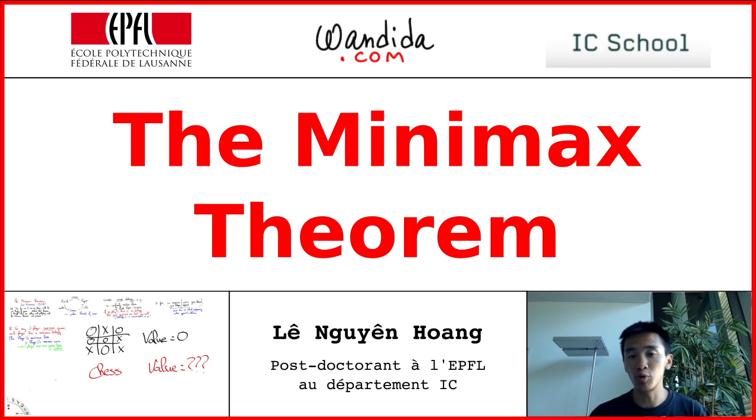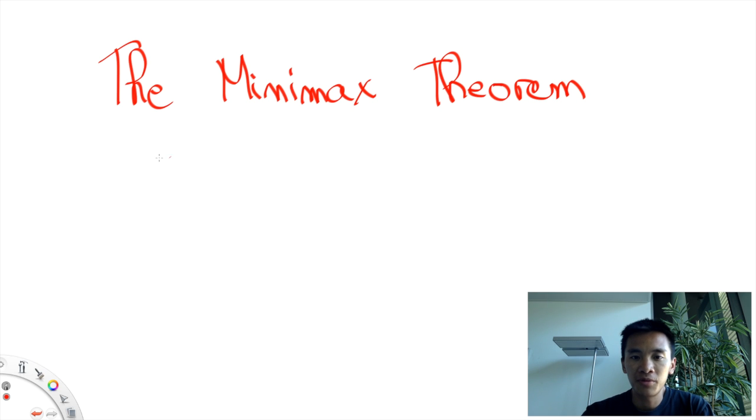Today I want to tell you about the Minimax theorem, which is regarded by many as the theorem that started game theory. The Minimax theorem was proved by John von Neumann in 1928.